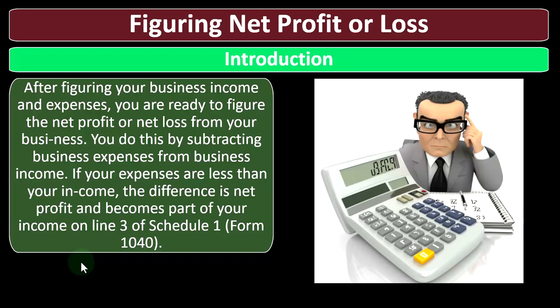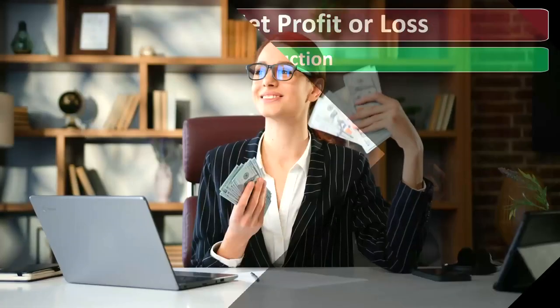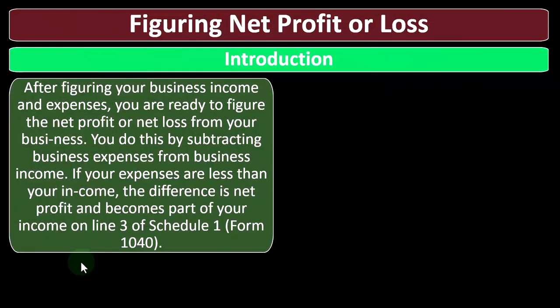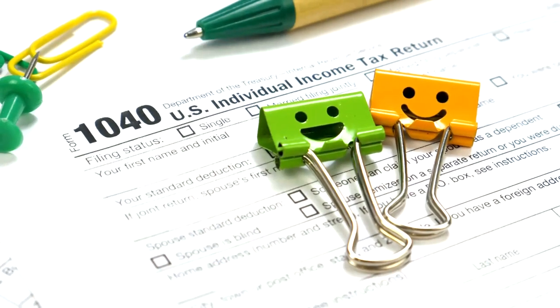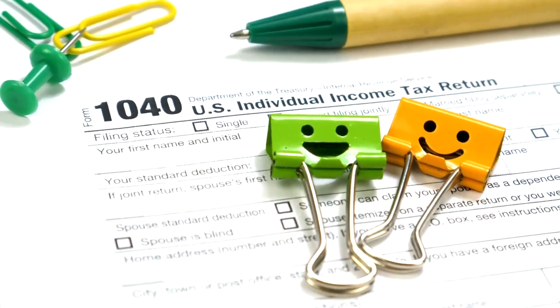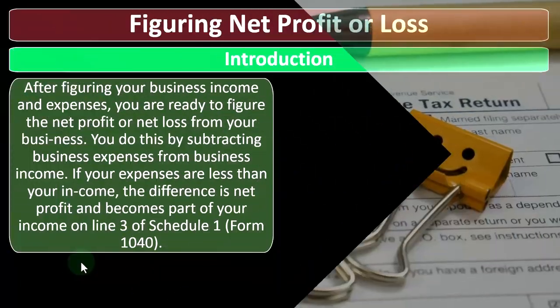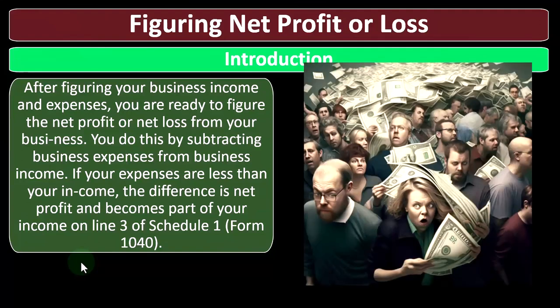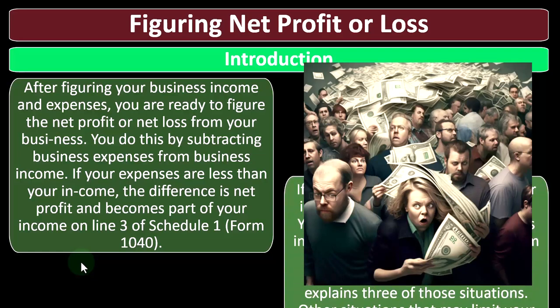If your expenses are less than your income, that means you have more income than expenses. That income will flow through and be taxable, ultimately going into the first page of Form 1040 and increasing your income to be taxed. The net profit flows from Schedule C to Schedule 1, and then from Schedule 1 onto the first page of Form 1040.